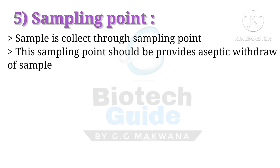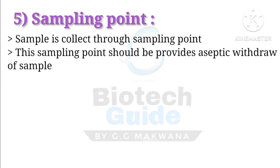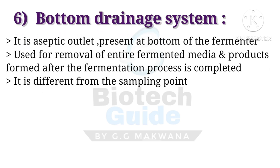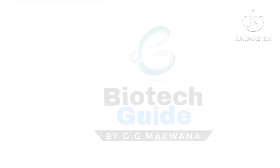The fifth part is the sampling point. The sample is collected through the sampling point, and this sampling point should provide aseptic withdrawal of a sample. The sixth part is the bottom drainage system — it is an aseptic outlet present at the bottom of the fermenter, used to remove the entire fermented media and the product formed after the fermentation process is completed. It is different from the sampling point.